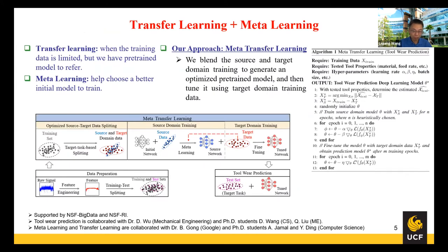Besides knowledge distillation, transfer learning and meta learning are also very useful techniques to help train deep neural network models. Transfer learning is mainly used when training data is very limited but a pre-trained model is available. We are working on a project to measure the transferability of pre-trained models to help users choose a better one. We are also developing a lazy meta learning approach to improve meta learning performance. Anyone interested in these can discuss details offline.